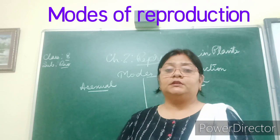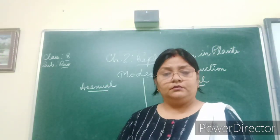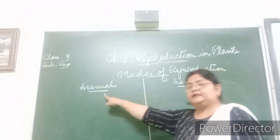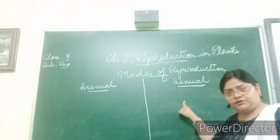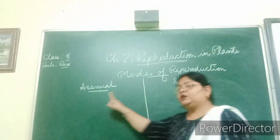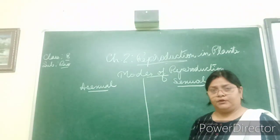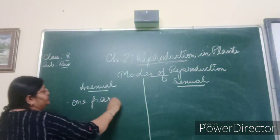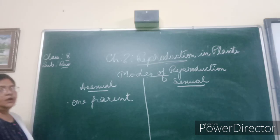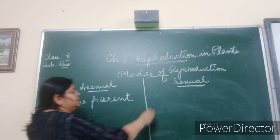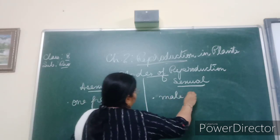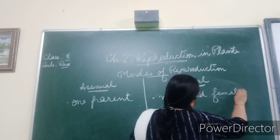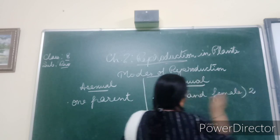Now that we know reproduction is a very important process, we need to know how it occurs. There are two modes of reproduction: asexual and sexual reproduction. In asexual reproduction, only one parent is required. In sexual reproduction, male and female — that is, two parents — are required.